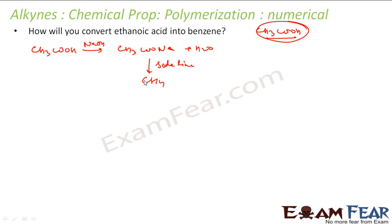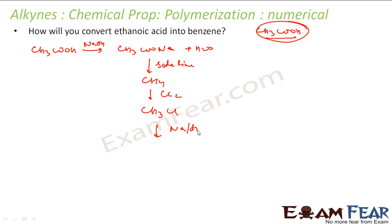From methane I can get ethane. I can do the chlorination of methane to get CH₃Cl. Then using Wurtz's reaction — taking two CH₃Cl molecules with sodium in dry ether — the chlorines are removed and I get ethane.